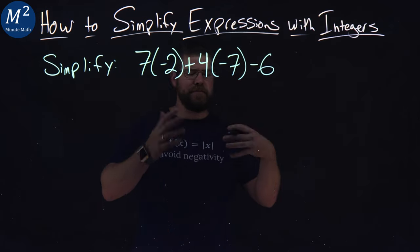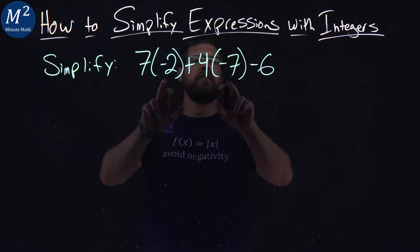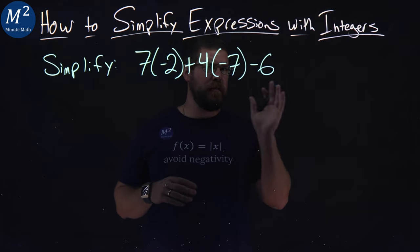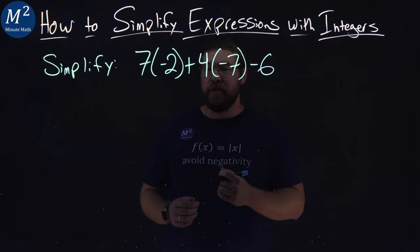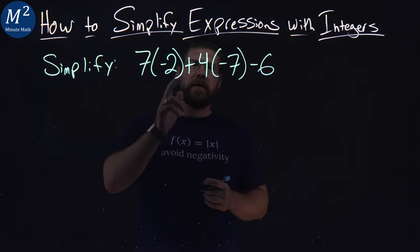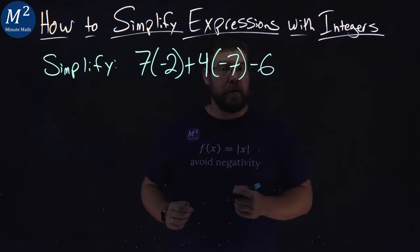Our order of operations first says parentheses. Well, each one of the values in our parentheses are by themselves, so we can skip that now. There's no exponents. Then comes multiplication and division. Multiplication happens twice, so let's deal with that.